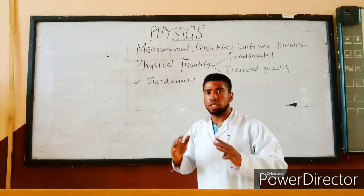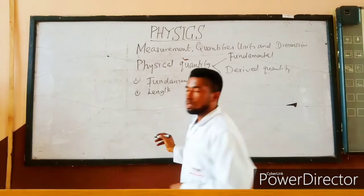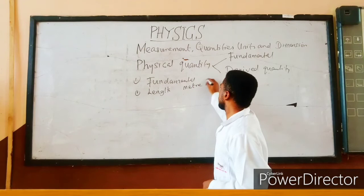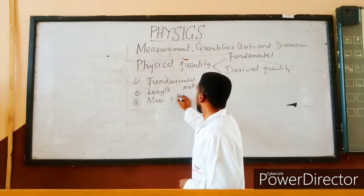The first fundamental quantity is length. The unit of length is the meter, and the symbol is m. Another fundamental quantity is mass. Mass is measured in kilograms, and the symbol is kg.